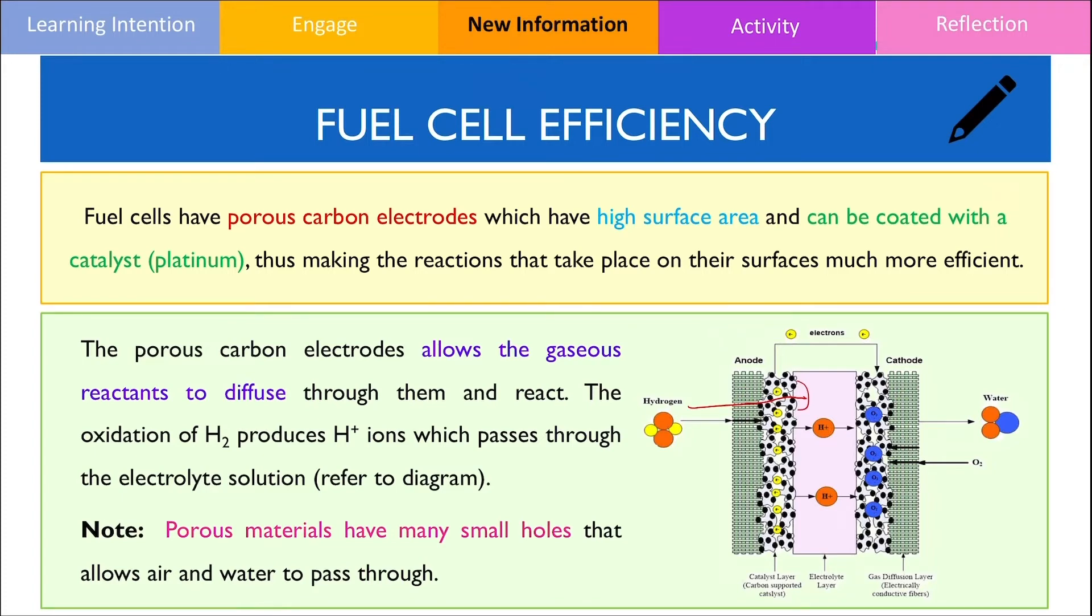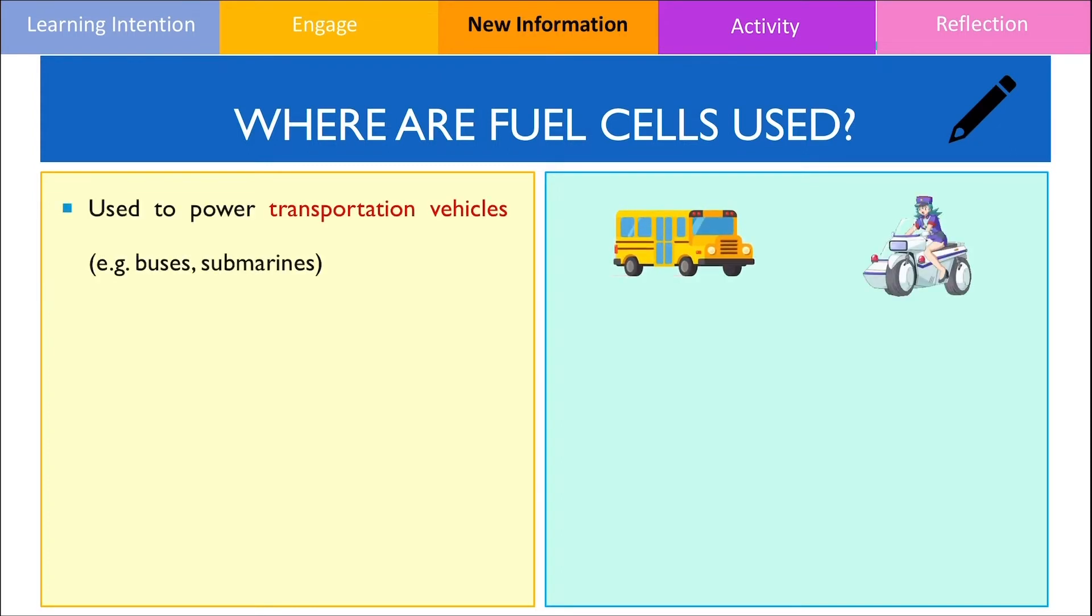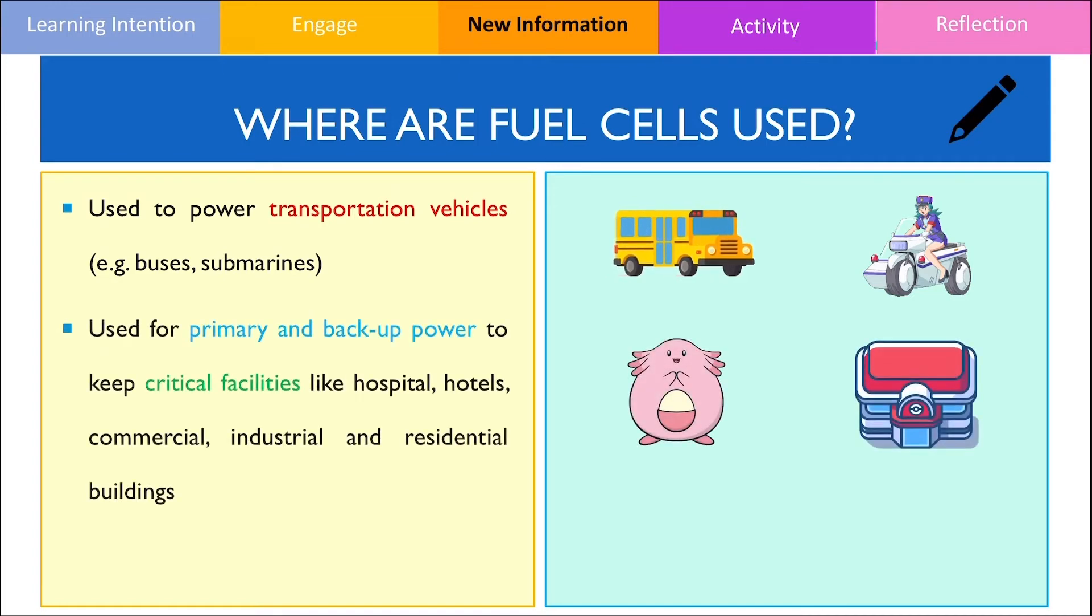Although fuel cells are highly efficient and produce relatively clean energy compared to traditional means, they have limited uses and are not widespread yet. They are typically used to power transportation vehicles such as buses and submarines, primarily used as a backup generator to keep critical facilities like hospitals and hotels working in case of blackouts or other emergencies, and they are also used in spacecrafts like shuttles.